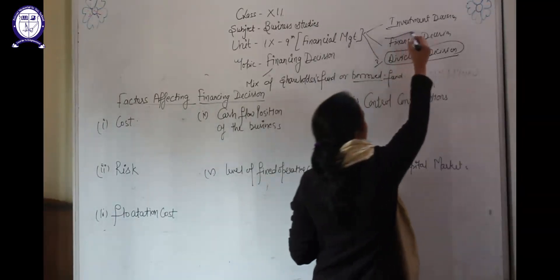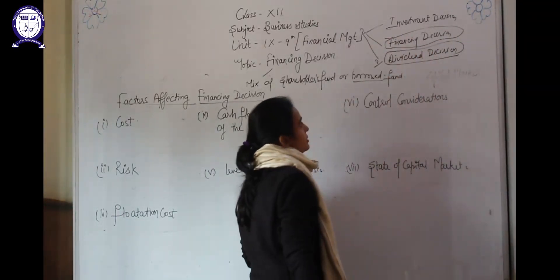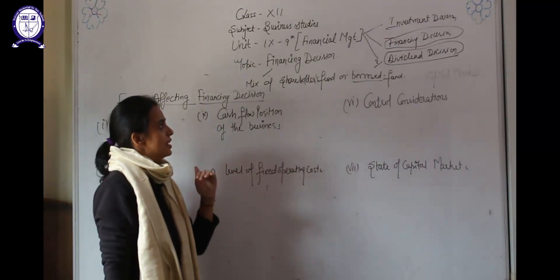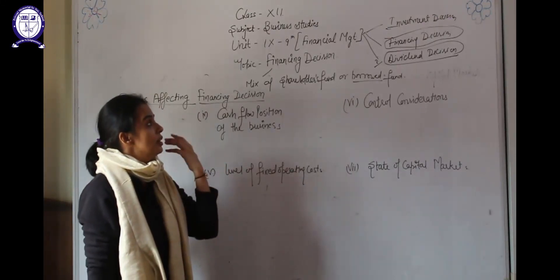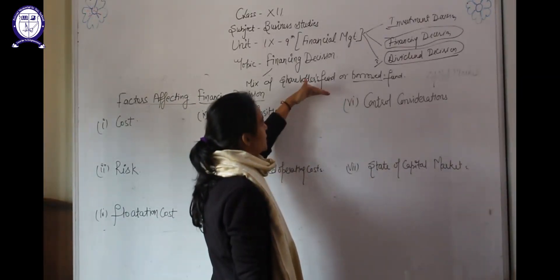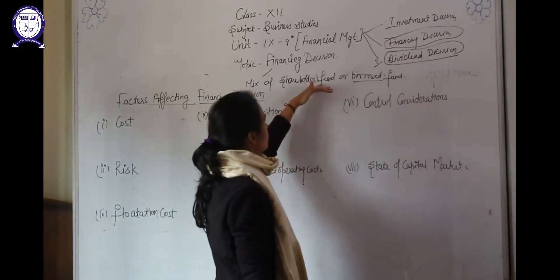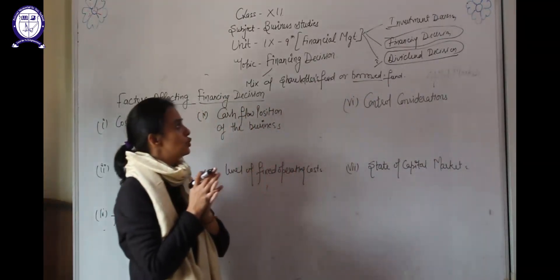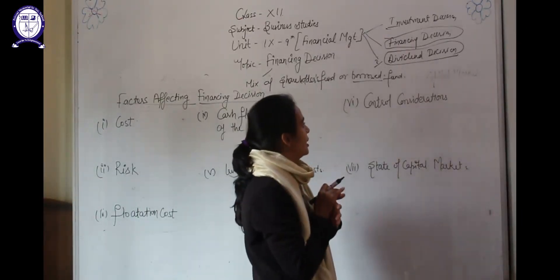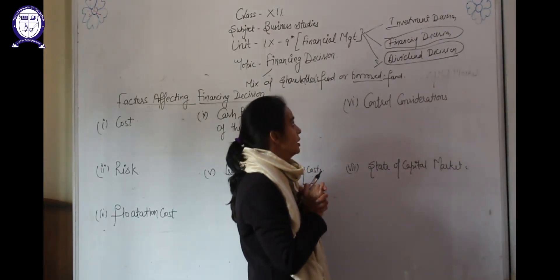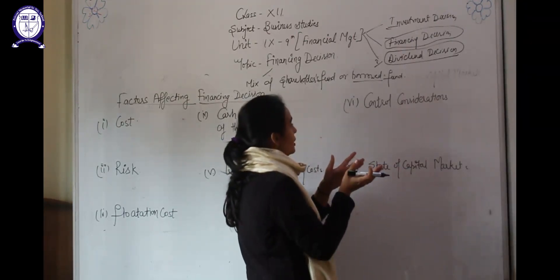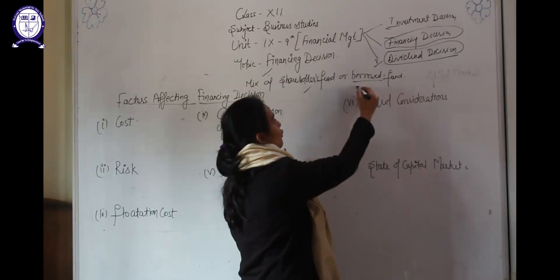So what is the meaning of financing decision? For investing money into the business or in a project, there is a need of money. A company or finance manager has to arrange funds for doing investment in the business. A company can arrange funds either from shareholder funds or borrowed funds. Shareholder funds include money collected by the issue of equity shares, preference shares, or retained earnings. Borrowed funds include issue of debentures, loans from banks, or public deposits. The company has to decide whether to collect from shareholder funds, borrowed funds, or a mix of both.